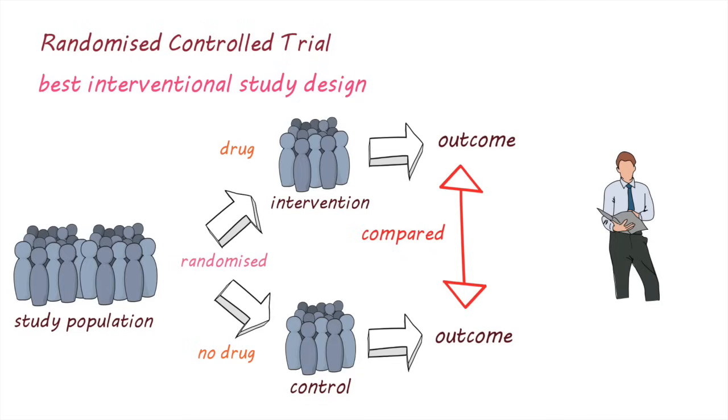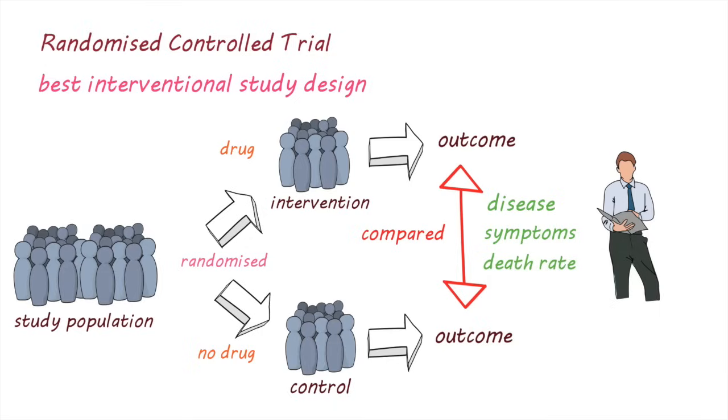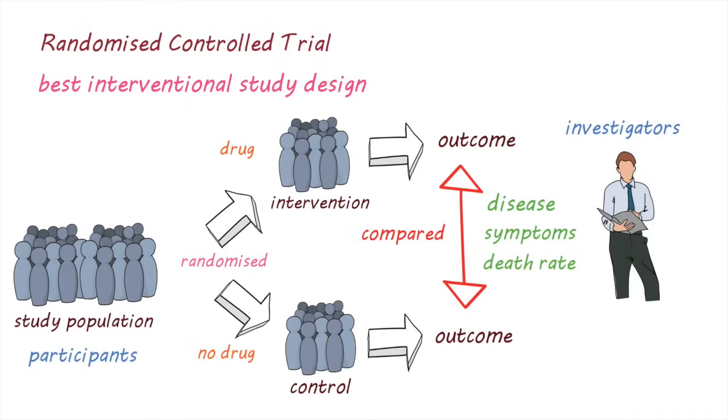Outcomes can be things like a change in disease, symptoms, or death rates. Ideally, neither the participants nor the investigators should know which group received the intervention. This is called double blinding and ensures that neither of them can influence the outcome of the study.